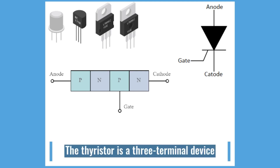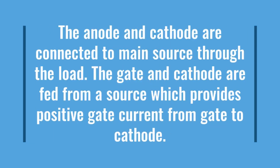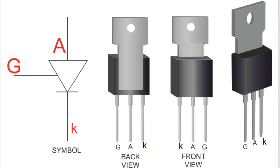The thyristor is a three-terminal device — anode, cathode, and gate — consisting of three PN junctions, which can be switched on and off at an extremely fast rate, or switched on for variable lengths of time during half cycles to deliver a selected amount of power to a load. It is a four-layer PNPN semiconductor with three PN junctions and three terminals. The anode and cathode are connected to the main source through the load; the gate and cathode are fed from a source providing positive gate current. The thyristor is used as a switch and is not suitable as an analog amplifier. The anode is the positive terminal and cathode is the negative terminal; it acts as a rectifier transmitting current in one direction only.